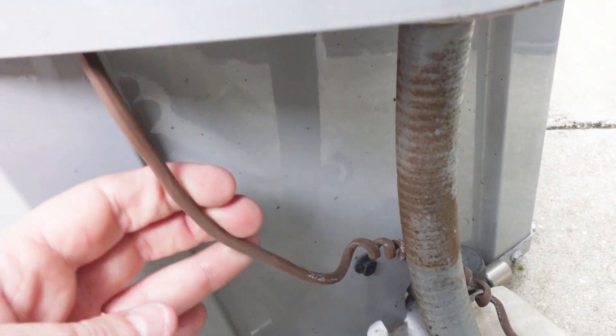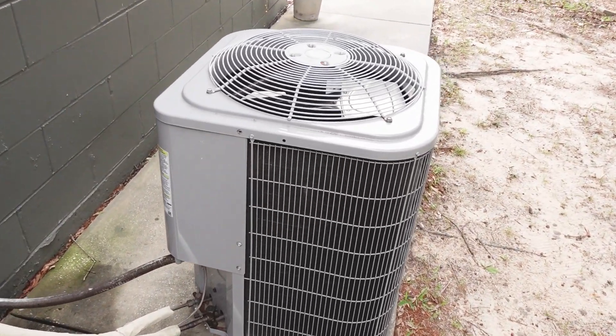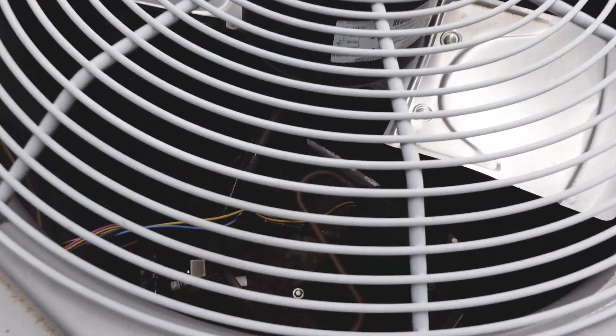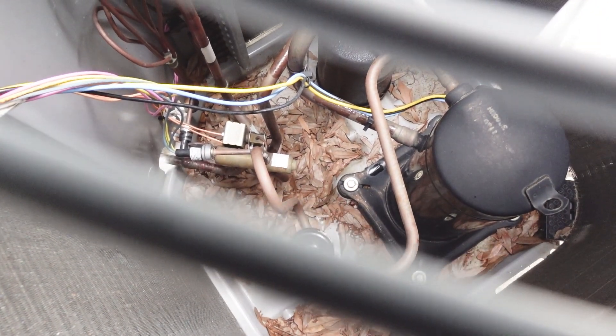Inspect your control conductors outside. Ensure that there's no damage from weed eaters or other lawn equipment. Look inside of your condensing unit and ensure that none of the conductors inside are rubbing against any of the copper tubing, causing chafing and damage, which can often lead to a low voltage fuse short.